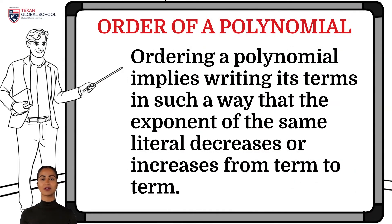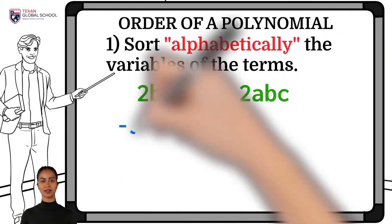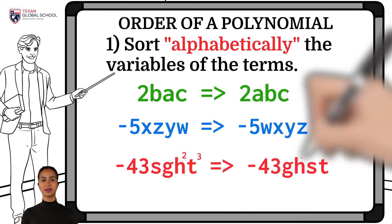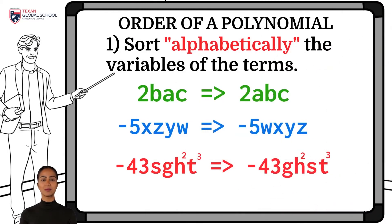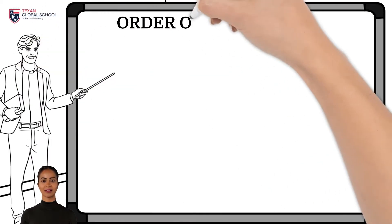Ordering a polynomial implies writing its terms so that the exponent of the same literal decreases or increases from term to term. The first step is to sort alphabetically the variables of each term of the polynomial. For example, the term 2bac is ordered as 2abc, and negative 5xyw is ordered as negative 5wxy.